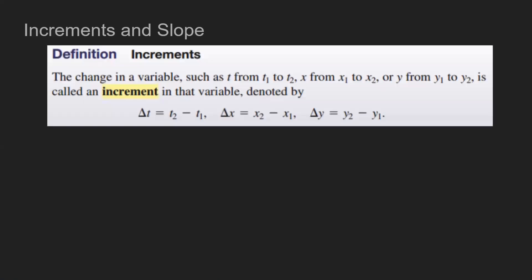So what is an increment? An increment is a change in a variable — for example, such as t as it goes from t sub 1 to t sub 2. Same things with x's and y's. You're typically used to seeing this in terms of slope with change in x over change in y, or maybe in a motion problem where you see delta t.